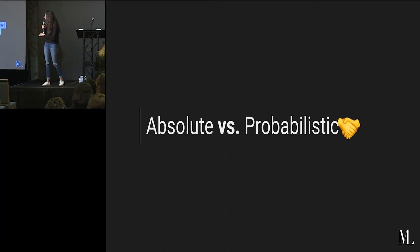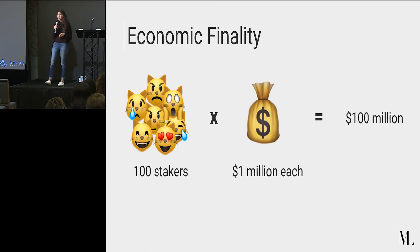So now going back a little bit to what we skipped over, there's also this notion of economic finality, which is orthogonal to both absolute and probabilistic finality, meaning that economic finality can exist in either case. So this is something that comes up when we talk about proof-of-stake blockchains that employ slashing. So in this case, if a staker acts maliciously, say double signs, then their stake can be completely slashed.